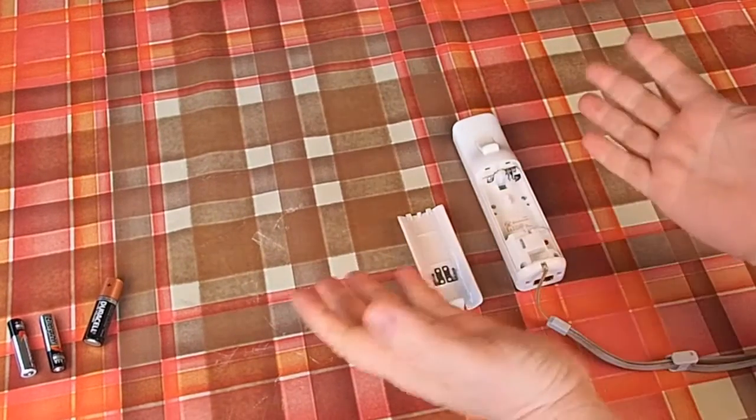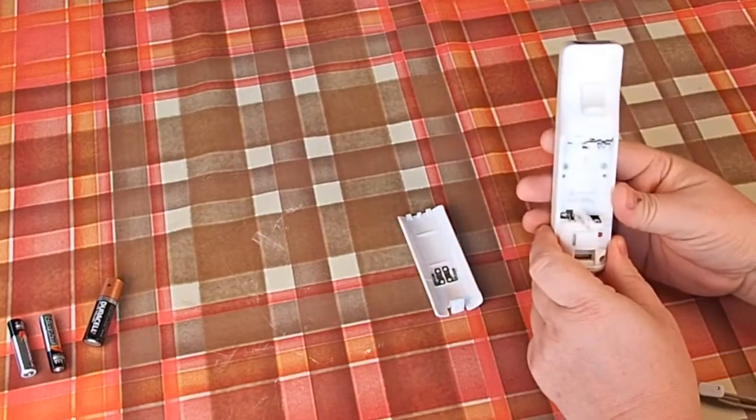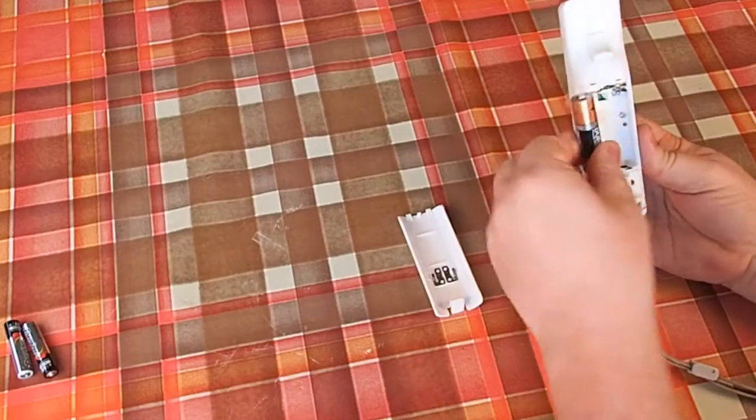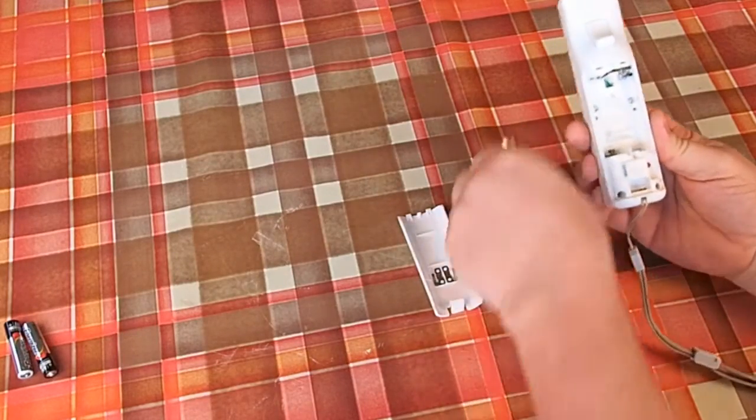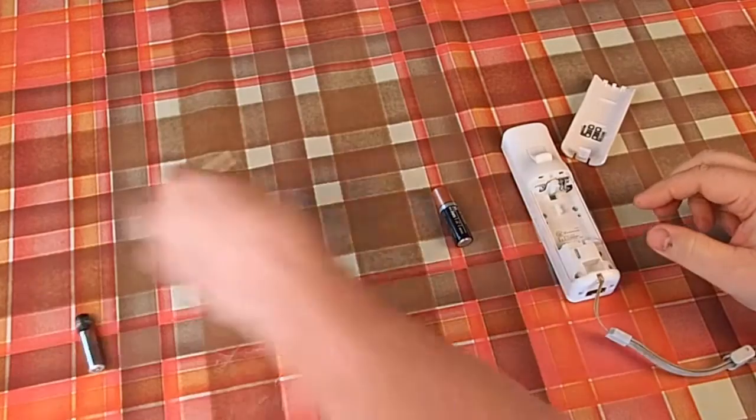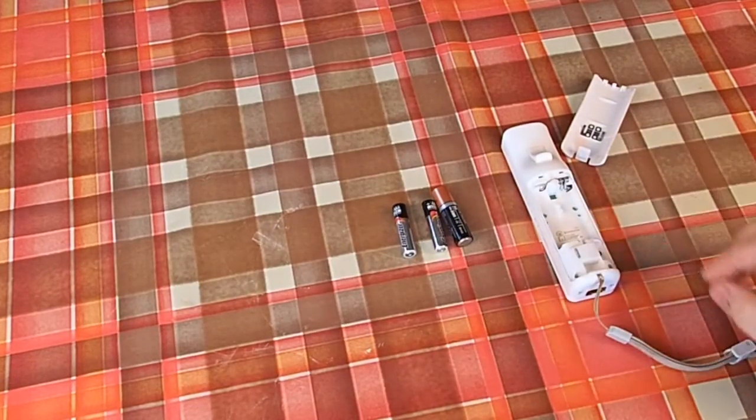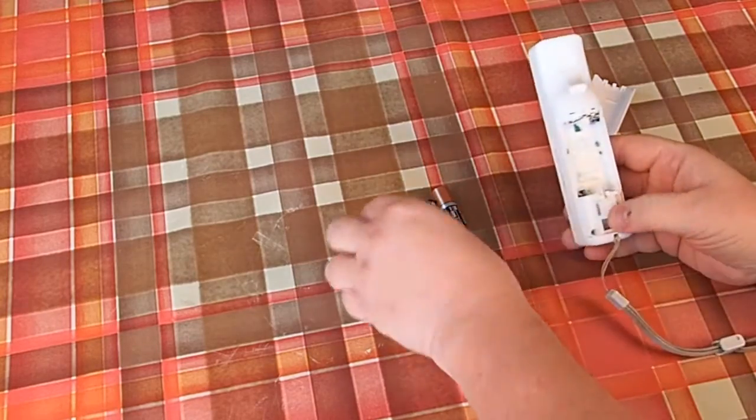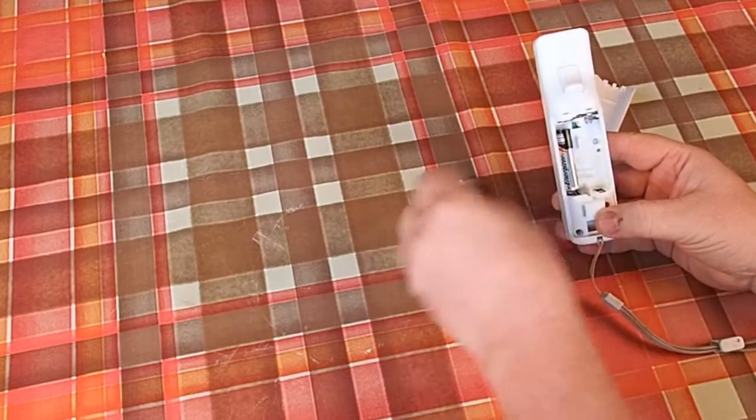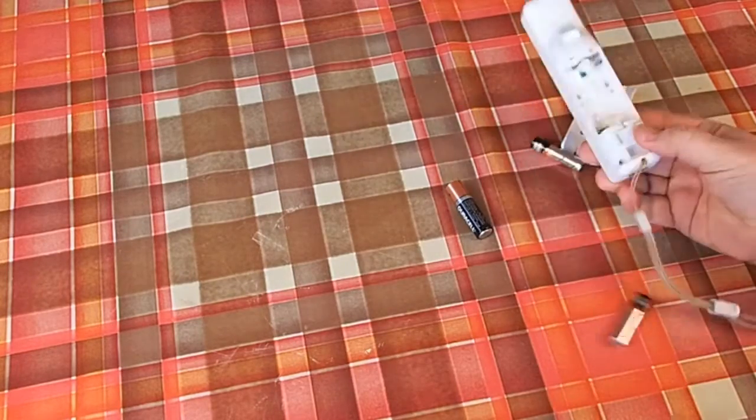Your remote control has stopped working and it takes AA sized batteries but you can't find any. You're at your wits end as these AAA batteries are the same 1.5 volts each, the same as the AA batteries but the smaller AAA batteries are too small to fit into your controller.